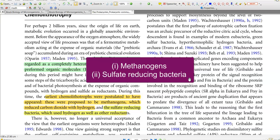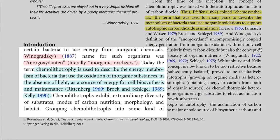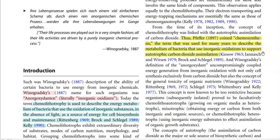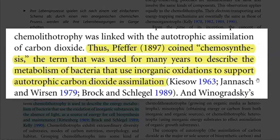The next important group is the sulfate-reducing bacteria, which again use hydrogen as a reductant for their growth process. The process of chemolithotrophy was first described by Winogradsky. He referred to them as 'anorgoxydans,' literally meaning the inorganic oxidizers group of organisms. He defined chemolithotrophy as an energy metabolism of bacteria that uses the oxidation of inorganic substances, in the absence of light, as a source of energy for cell biosynthesis and maintenance.